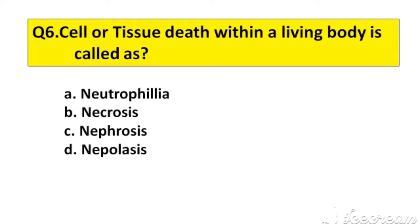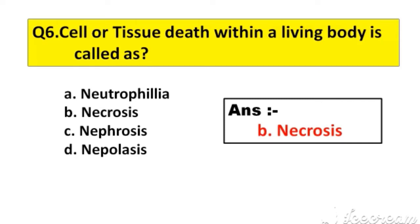Question number 6. Cell or tissue death within a living body is called as: A. Neutrophilia, B. Necrosis, C. Nephrosis, D. Neoplasis. The right answer is option B, Necrosis.